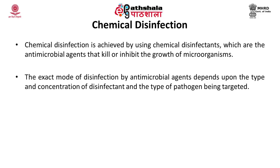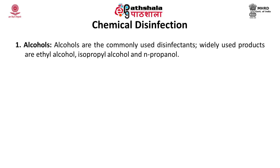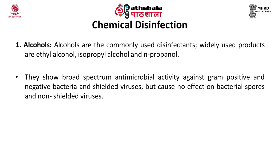Now let us discuss the chemical disinfection process. Chemical disinfection is achieved using chemical disinfectants, which are antimicrobial agents that kill or inhibit the growth of microorganisms. The exact mode of disinfection depends upon the type and concentration of the disinfectant as well as the type of pathogen being targeted. The commonly used chemical disinfectants belong to the class of alcohols — the widely used products are ethyl alcohol, isopropyl alcohol, and normal propanol. These alcohols show broad-spectrum antimicrobial activity and are effective against gram-positive and gram-negative bacteria as well as viruses, but cause no effect on bacterial spores.